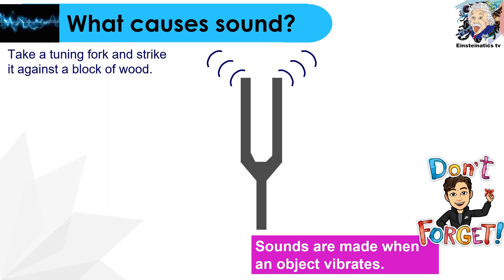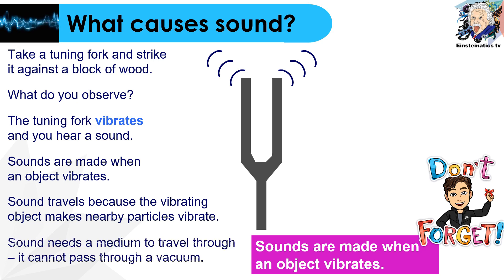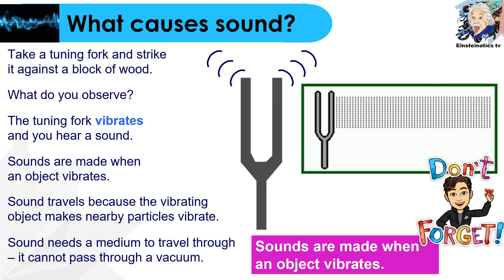First off, let us explore what causes sound. When you take a tuning fork and strike it against a block of wood, what will you observe? As you can see, the tuning fork would vibrate and thus you are hearing a sound. Specifically, sound is made when an object vibrates. Sound travels because the vibrating object makes nearby particles vibrate. Sound needs a medium to travel through and cannot pass through a vacuum. Remember that sounds are made when an object vibrates. Without vibration, you would not hear a sound.